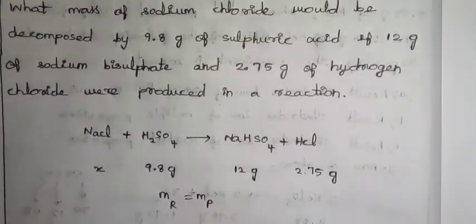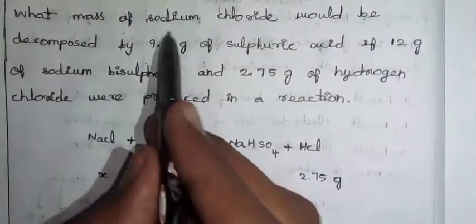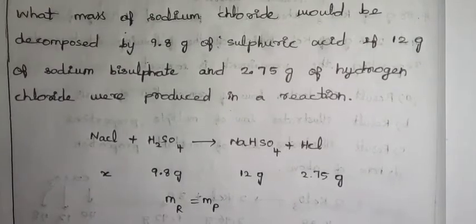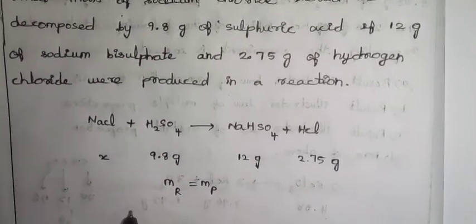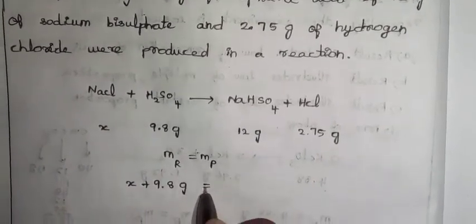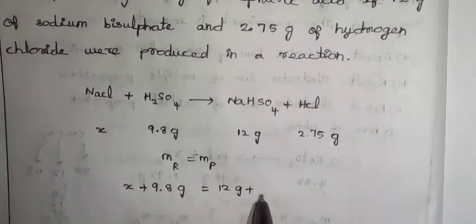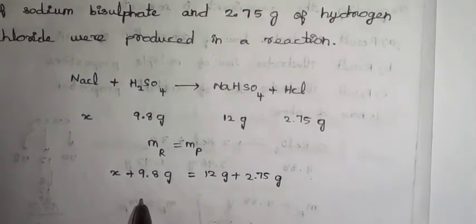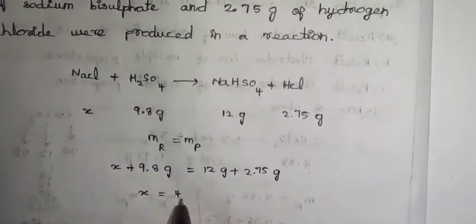If we apply x, NaCl is equal to what we call the mass of sodium chloride. That's x. It's the total mass of sodium chloride. Let's add this. If we apply law of conservation, we apply x plus 9.8 gram is equal to 12 gram plus 2.75 gram. If we solve for x, x equals 4.95 gram.